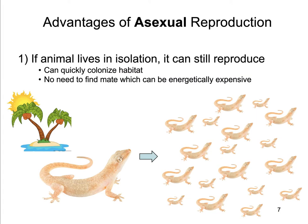Now that you've had time to brainstorm, let's talk about the advantages of asexual reproduction. The first is that if an animal lives in isolation and can reproduce asexually, it can still reproduce. If just a female colonizes a habitat and doesn't need a male to reproduce with, she can produce more copies of herself. So there's no need to find a mate.